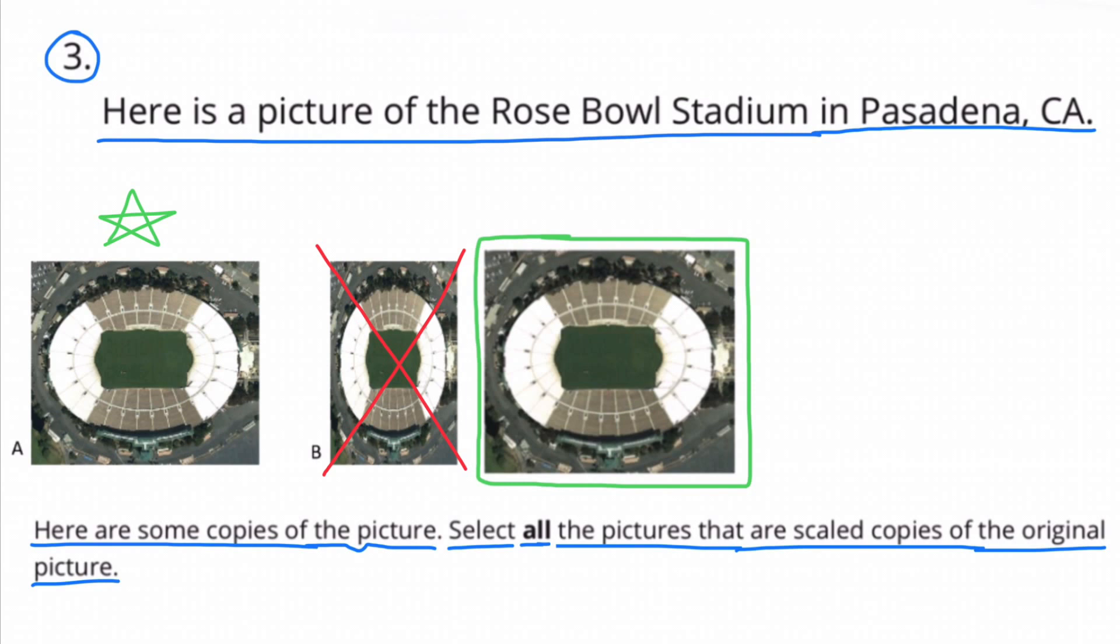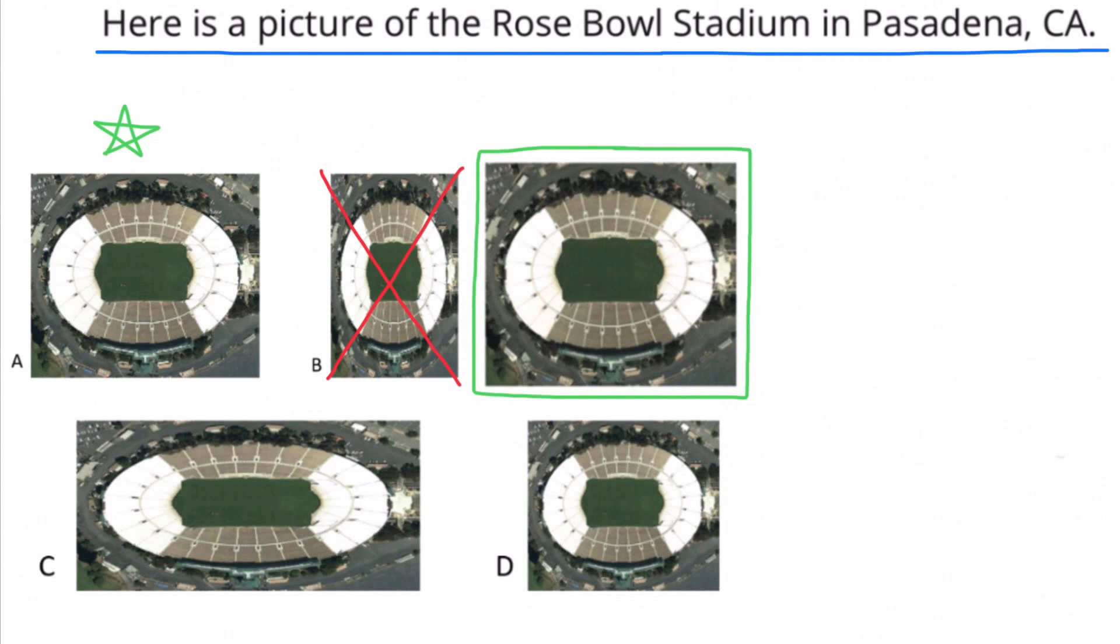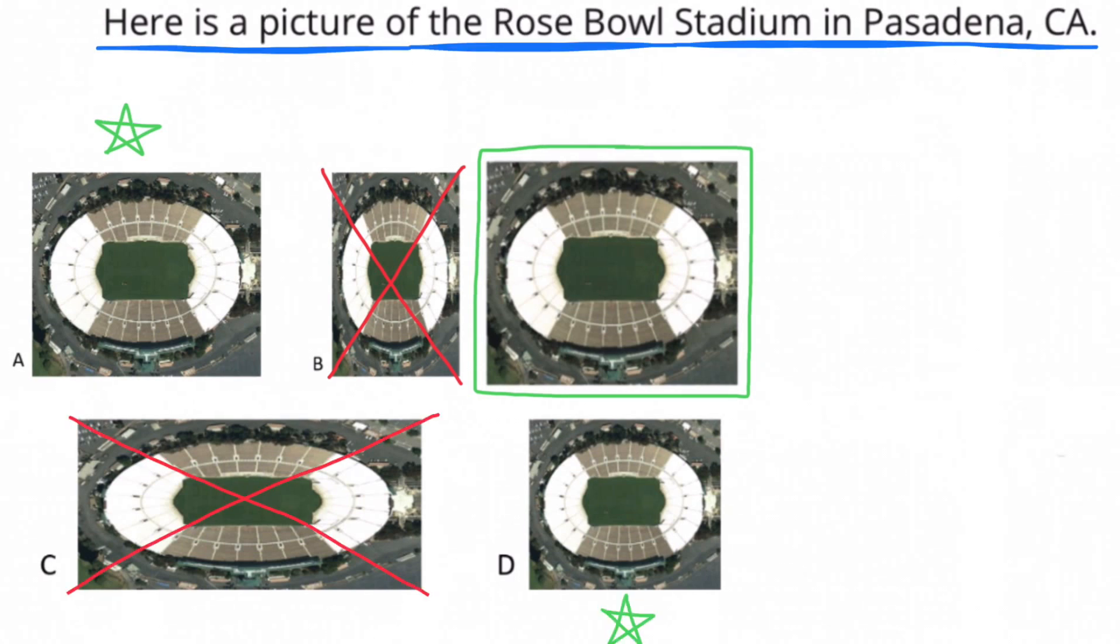Here's a look at pictures C and D. The height of picture C seemed to have gotten a little bit shorter, but the width of picture C seemed to have gotten a lot wider. Picture C does not look like a scaled copy of the original. When you look at picture D, its height looks like it got about the same percentage shorter as its width did. Picture D appears to be a scaled copy of the original.